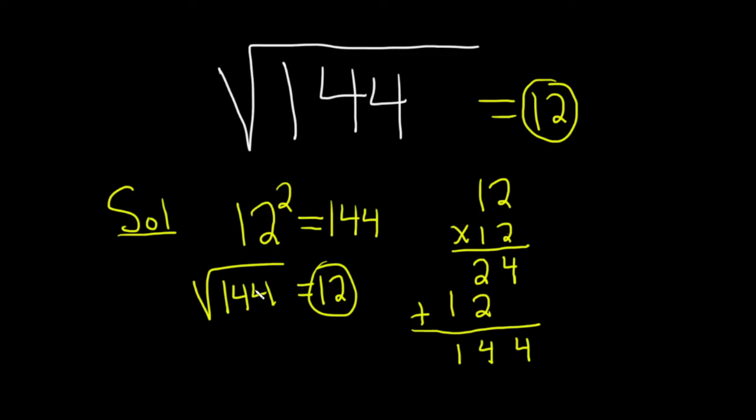It's worth mentioning that 144 has two square roots: 12 and negative 12. Because if you look at negative 12 squared, you also get 144. However, when we write this symbol with a positive number, we want the positive square root, so we write 12 instead of negative 12.